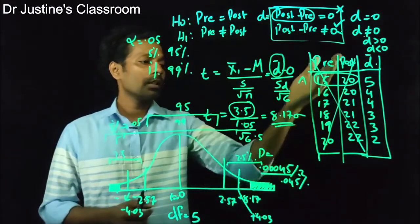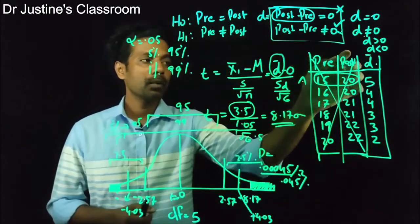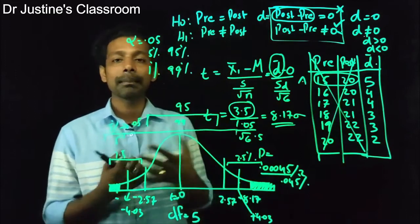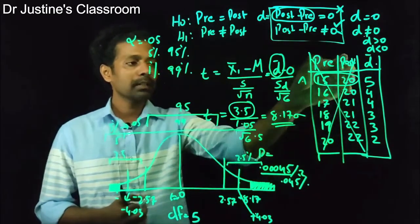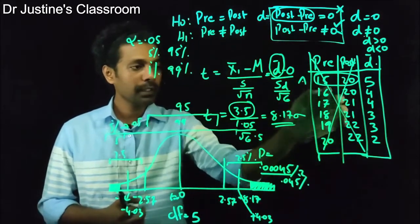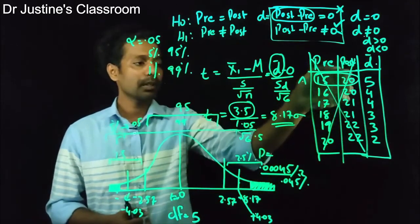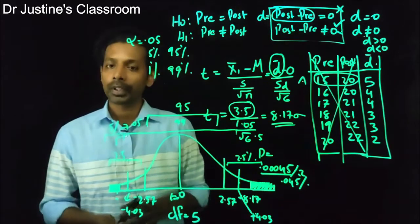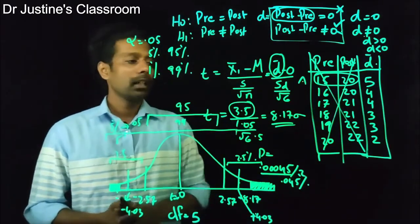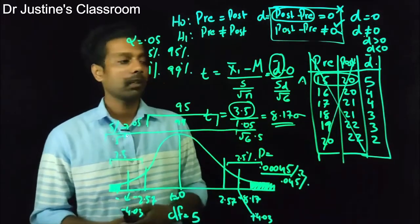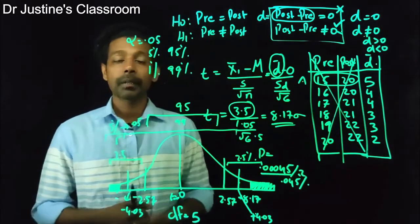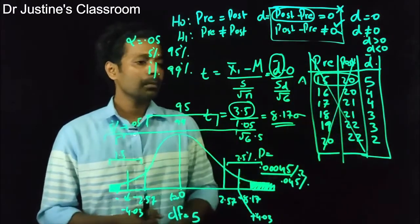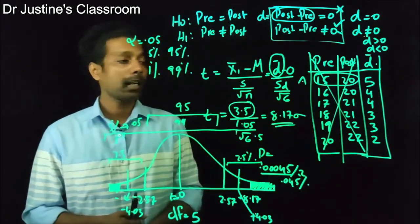The second assumption is that the scores have to be independent. Pre-test and post-test scores are of course dependent — they are paired data — but the independence assumption applies within each column. The scores within the pre-test column (15, 16, 17, 18, 19, 20) must be independent of each other, and similarly within the post-test column. The third assumption, which is somewhat controversial, is that the subjects must be randomly selected. Every textbook states that subjects must be randomly selected; otherwise the paired sample t-test cannot be used.